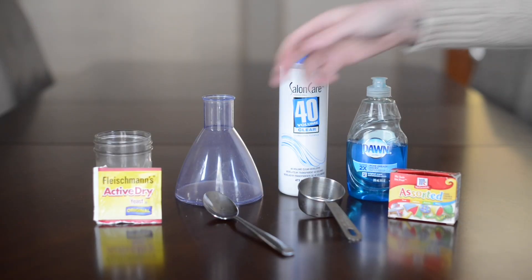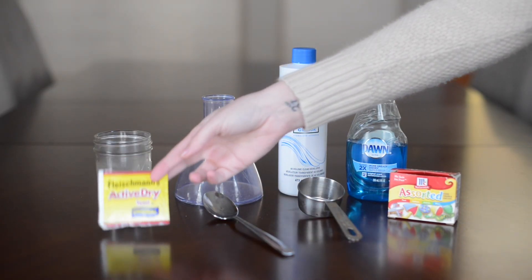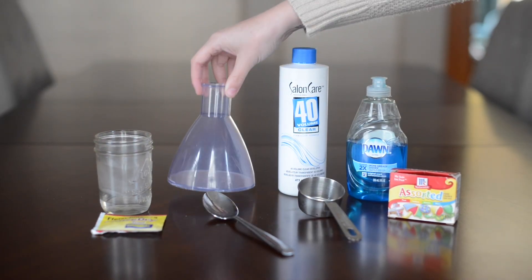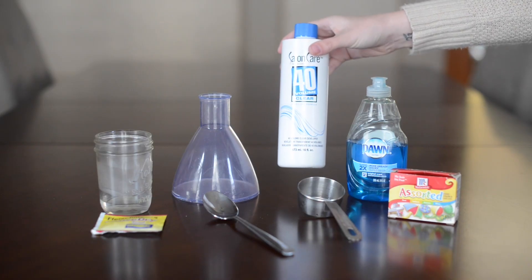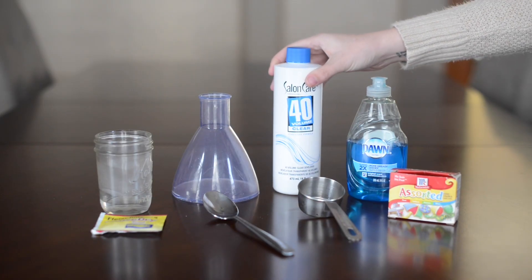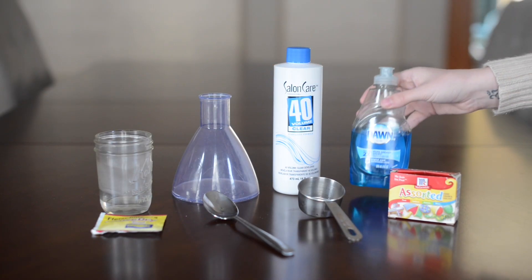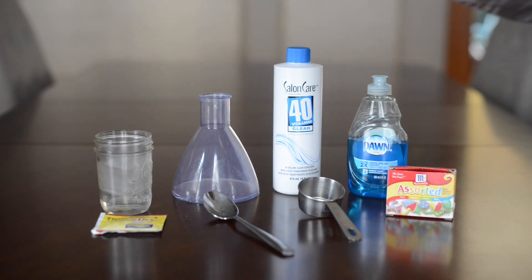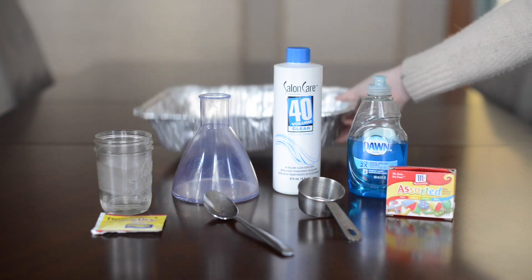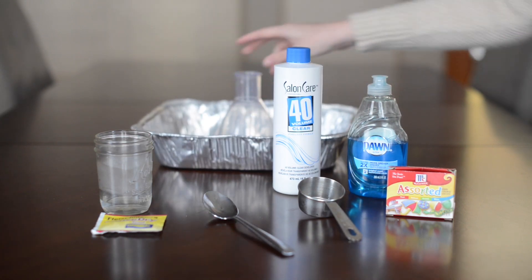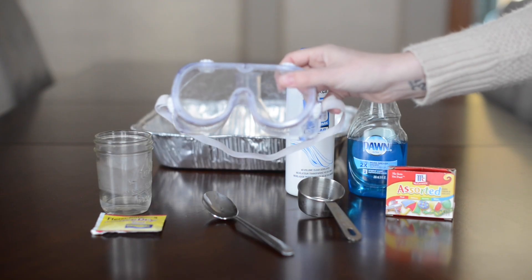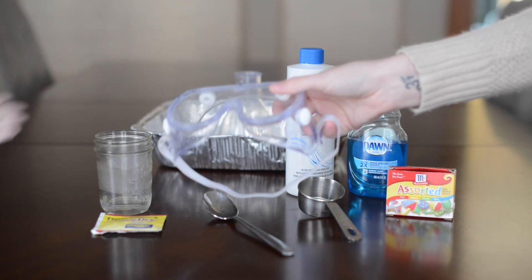This is a fun one. What you'll need is dry yeast, three tablespoons of warm water, an empty bottle. You could use a two liter bottle, 12% hydrogen peroxide. You could also use six percent or three percent, dish soap and food coloring. You'll also probably want an empty pan or something to catch the foam in. And because we're using 12% hydrogen peroxide, safety goggles.